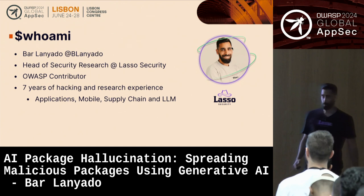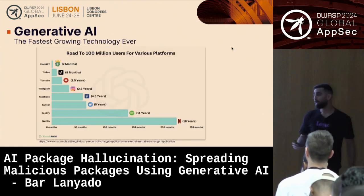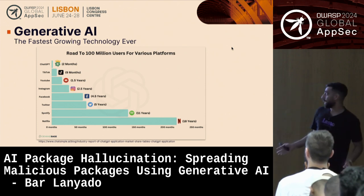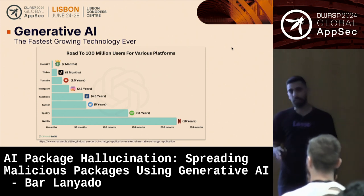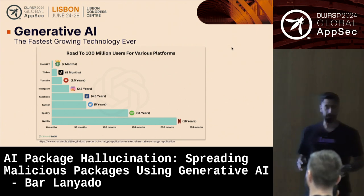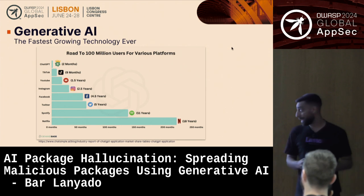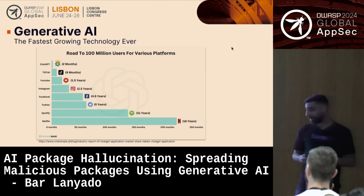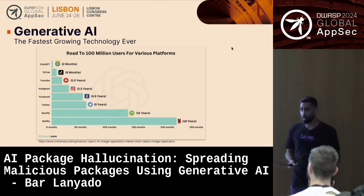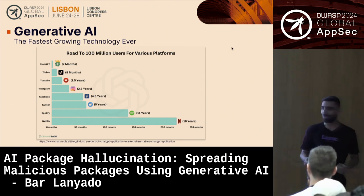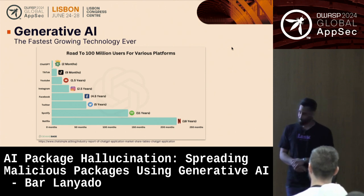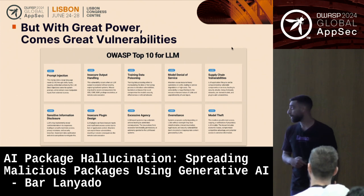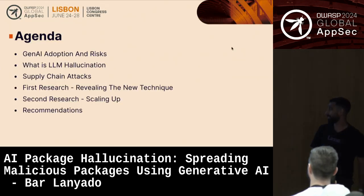Let's start with generative AI adoption. This is the fastest-growing technology we've ever seen. We can see on the graph that ChatGPT alone got 100 million users in less than two months — numbers that are crazy. I'm pretty sure everyone here is using some generative AI tools. Even my grandmother does. I think this is the biggest revolution since the internet, and it's going to be way bigger.